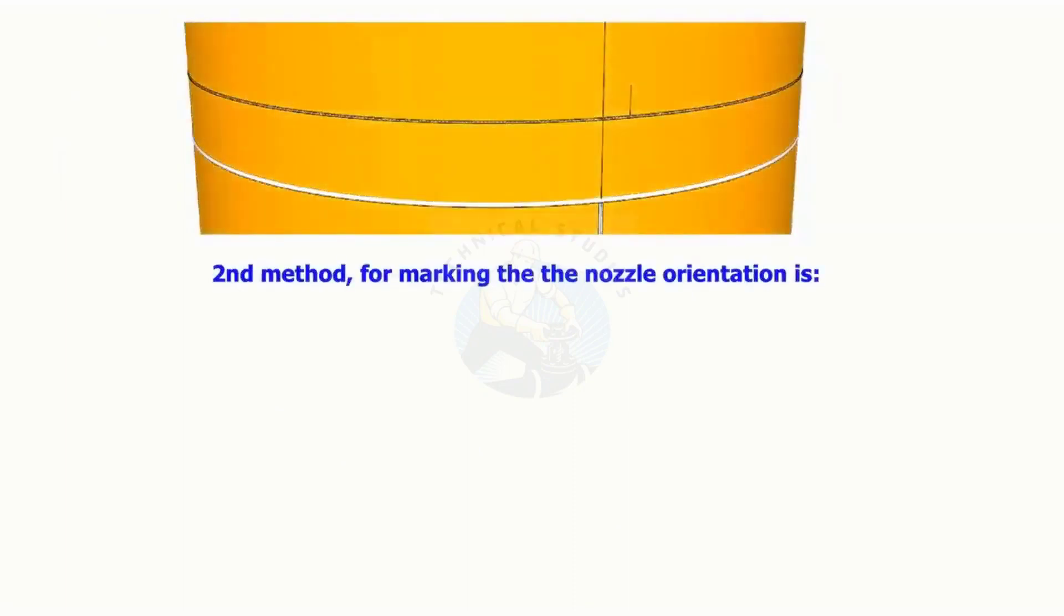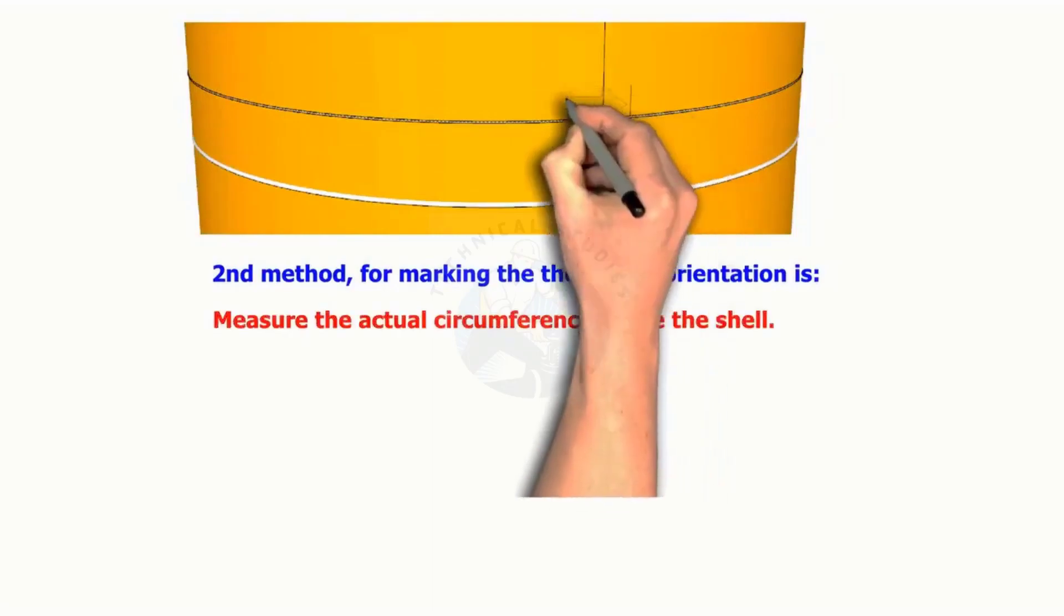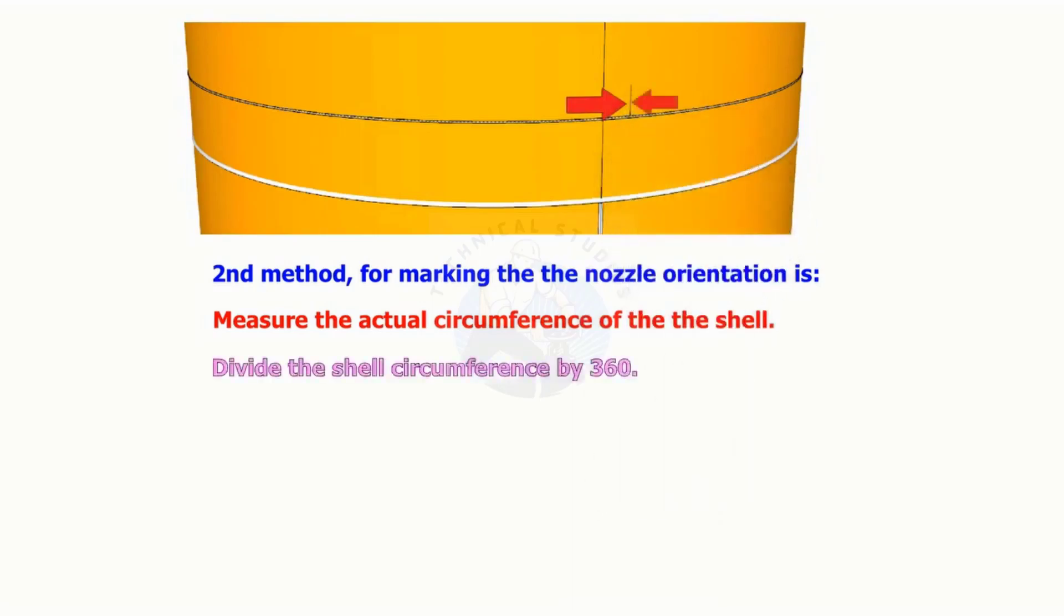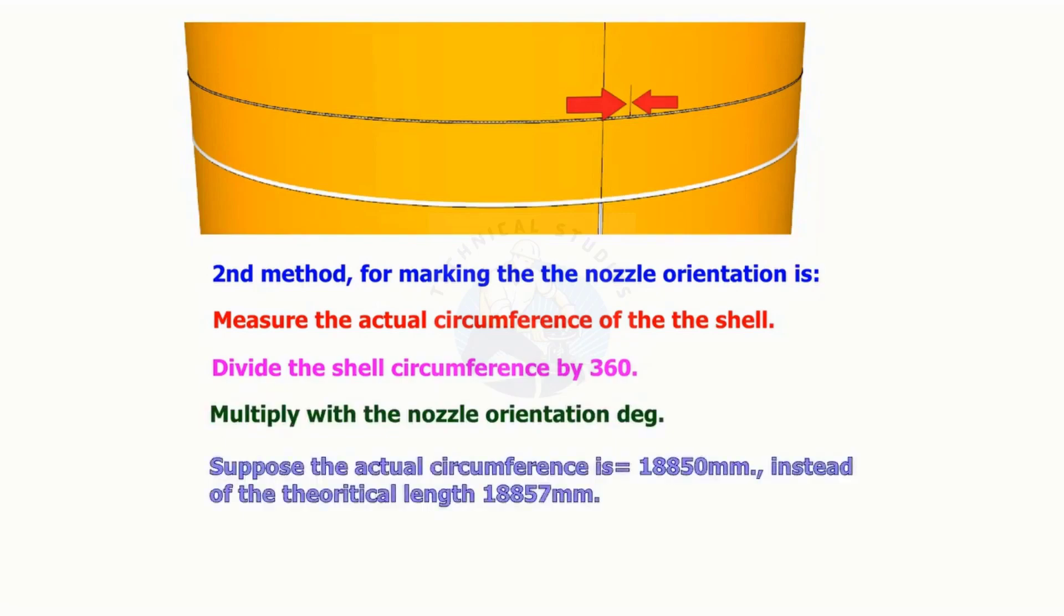The second method for marking the shell orientation is to measure the actual circumference of the shell by using a large flexible measurement tape. Divide the circumference by 360, then multiply by the nozzle orientation. Suppose the actual circumference is 18,850 instead of the theoretical length 18,857 millimeters.